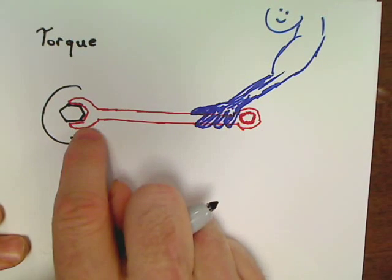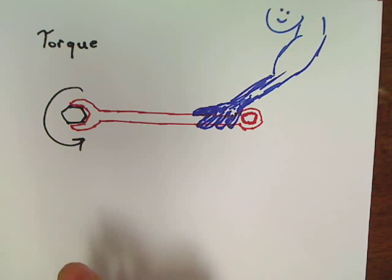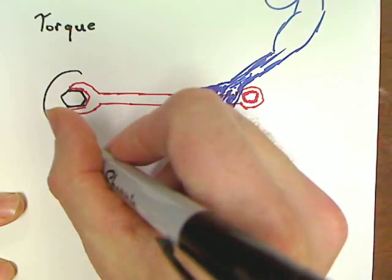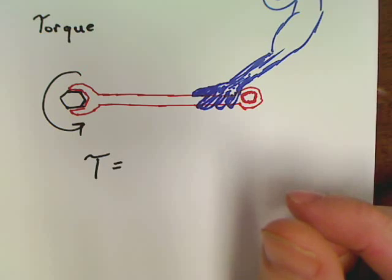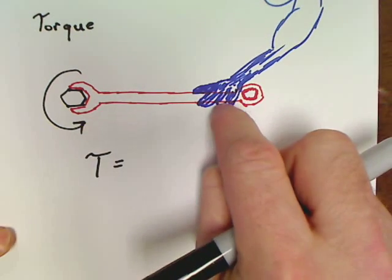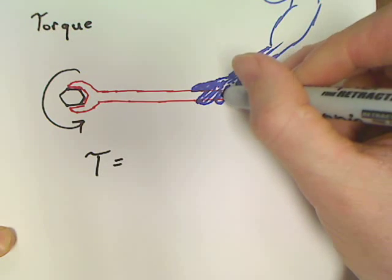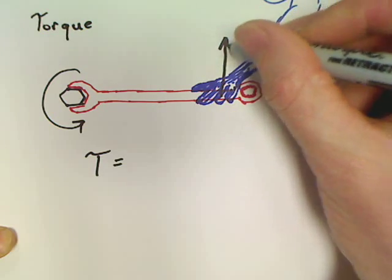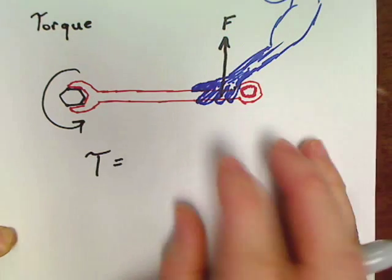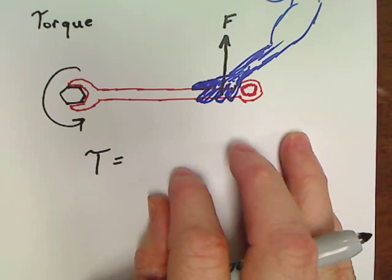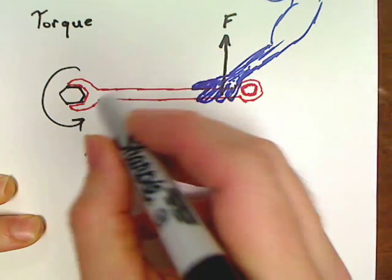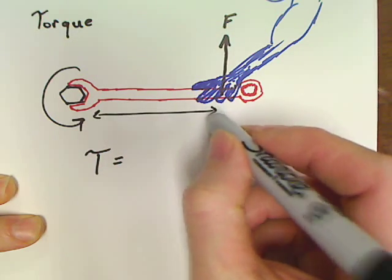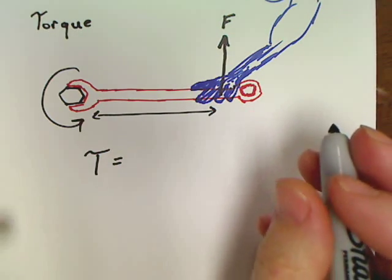So obviously torque, you should be thinking the equation pretty easy then. It's going to be a product of two things. Torque would be a product of the force that this person exerts, I shall pulleth thee, and it's also going to be a product of just how far is this person's hand from the pivot point.